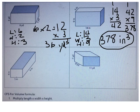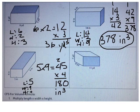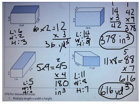Now you try a couple. The bottom left figure has a length of 5, a width of 9, and a height of 4. 5 times 9 is 45, and 45 times 4 is 180, so the volume is 180 cubic inches. The bottom right figure has a length of 11, a width of 8, and a height of 7. 11 times 8 is 88, and 88 times 7 is 616, so the volume is 616 cubic yards.